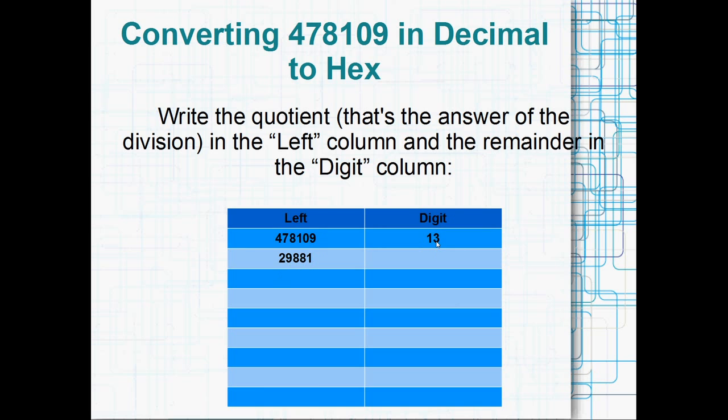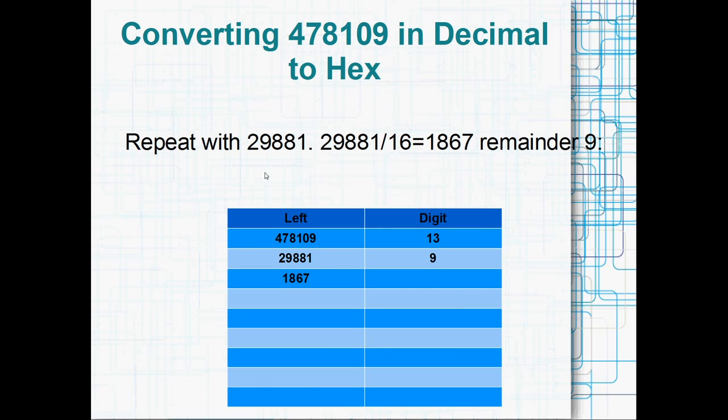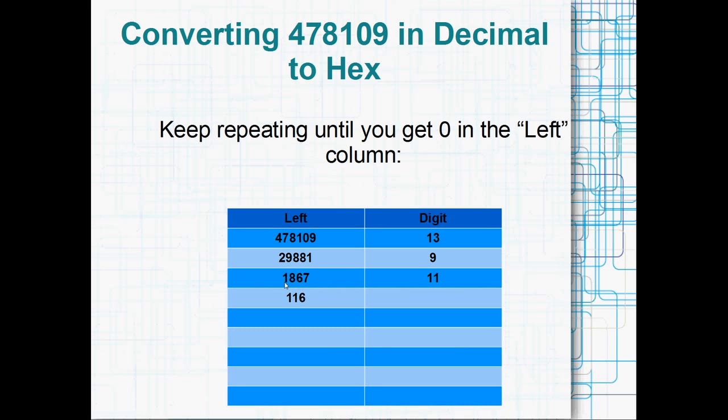So this 29,881 is the amount of the original number that we've still got to take care of. We've figured out that the first digit of the number in hexadecimal is 13, but this left column here is the amount left that we've still got to take care of. Anyway, I repeat the whole process, this time dividing 29,881 by 16. And that gives us 1,867 remainder 9. So I put the remainder in the digits column and 1,867 in the left column. And repeating the process again, we get 1,867 gives you 116 remainder 11. So I put the remainder in the digits column and the 116 in the left column.